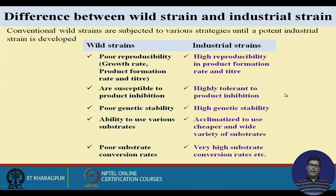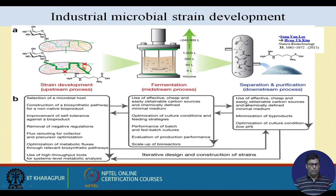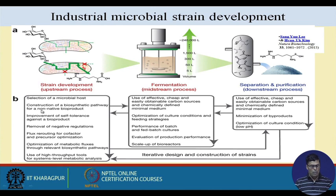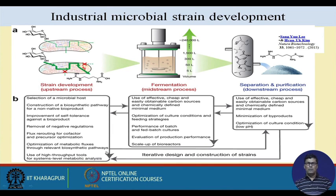These advantages explain why industrial strains are preferred by industry, though they are costly because they are specially prepared in labs. Industrial strain development involves three stages: upstream processing, midstream process, and downstream process. In strain development, we first select the microbial host, then construct biosynthetic pathways for non-native bioproducts, improve self-tolerance against bioproducts, and remove negative regulation.